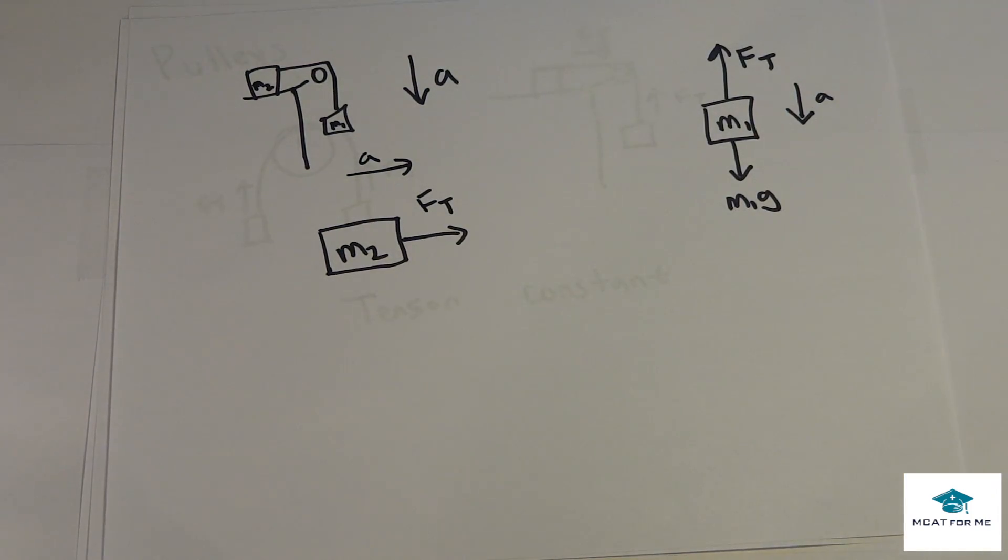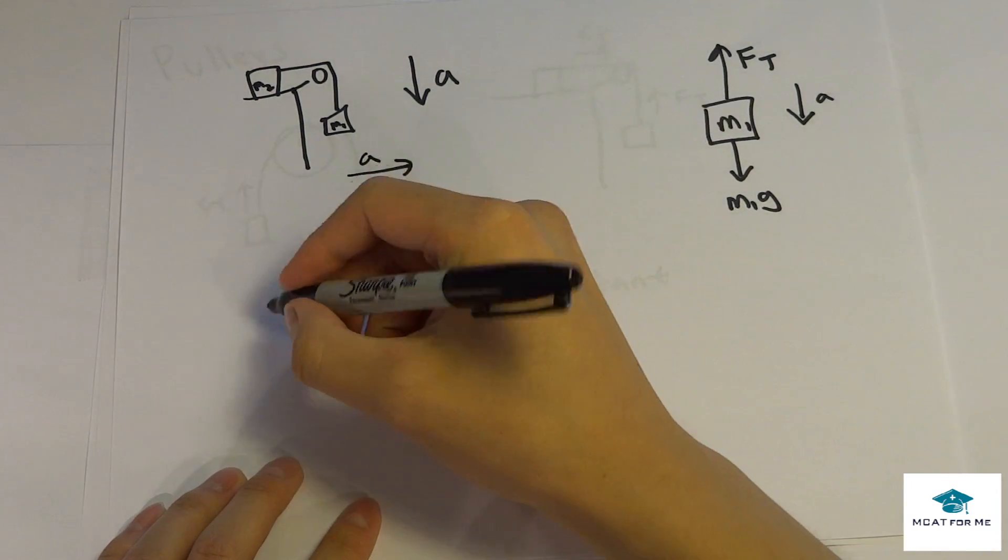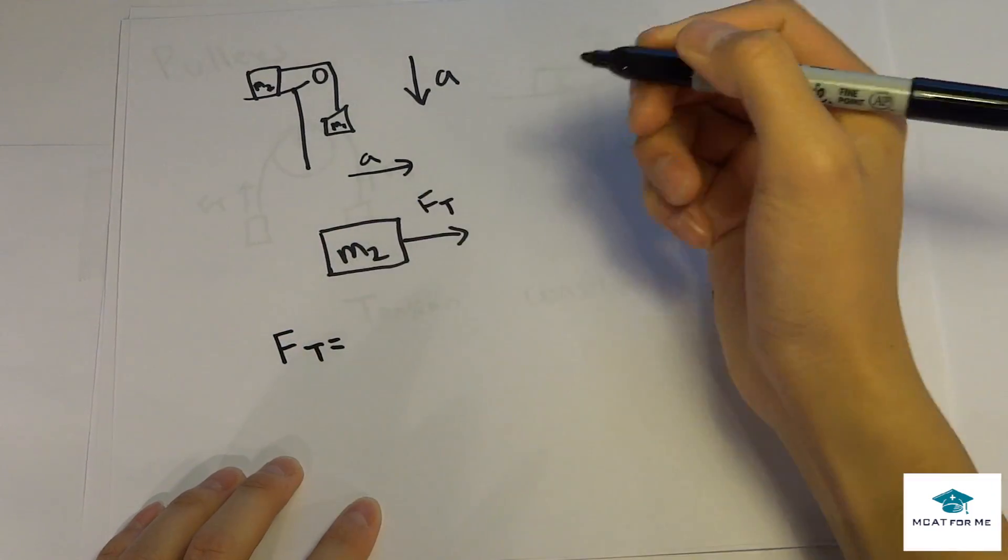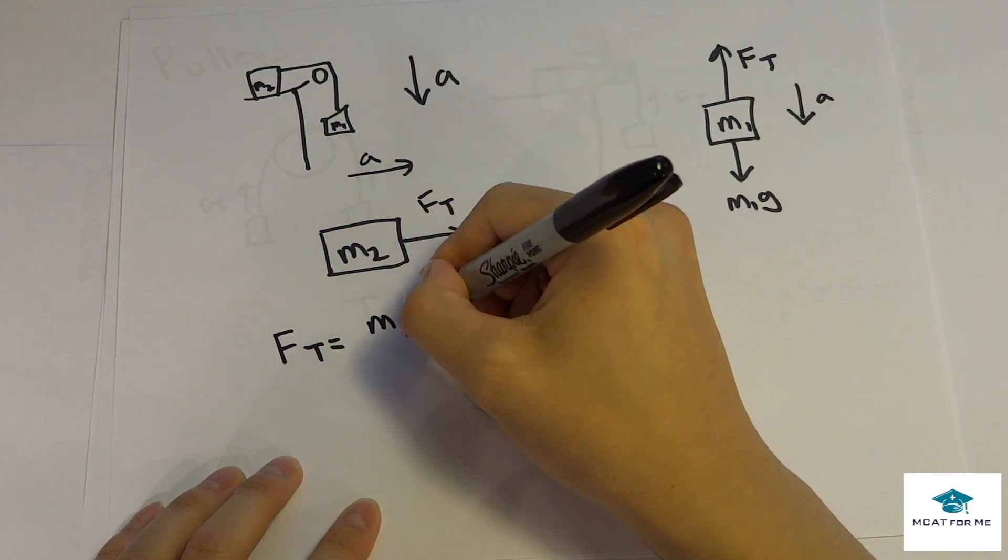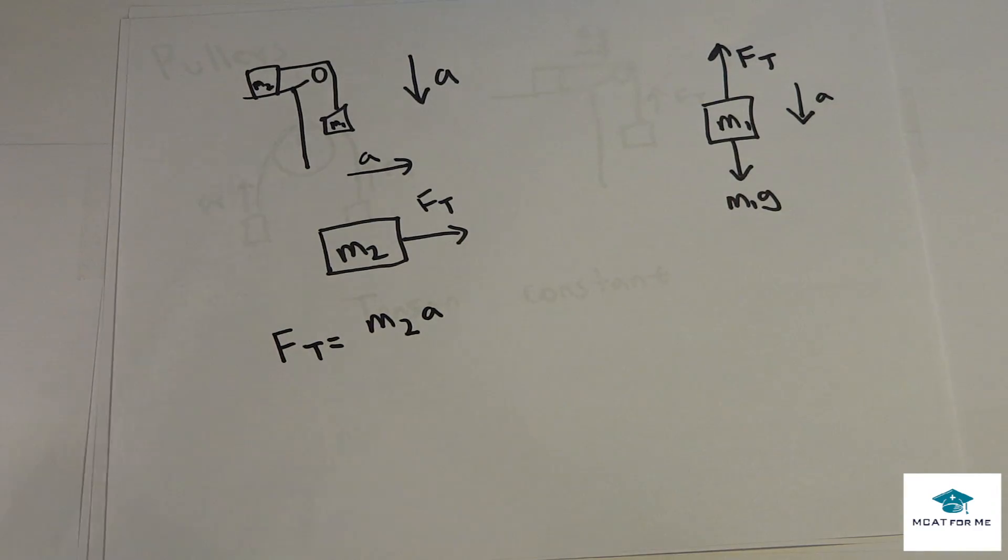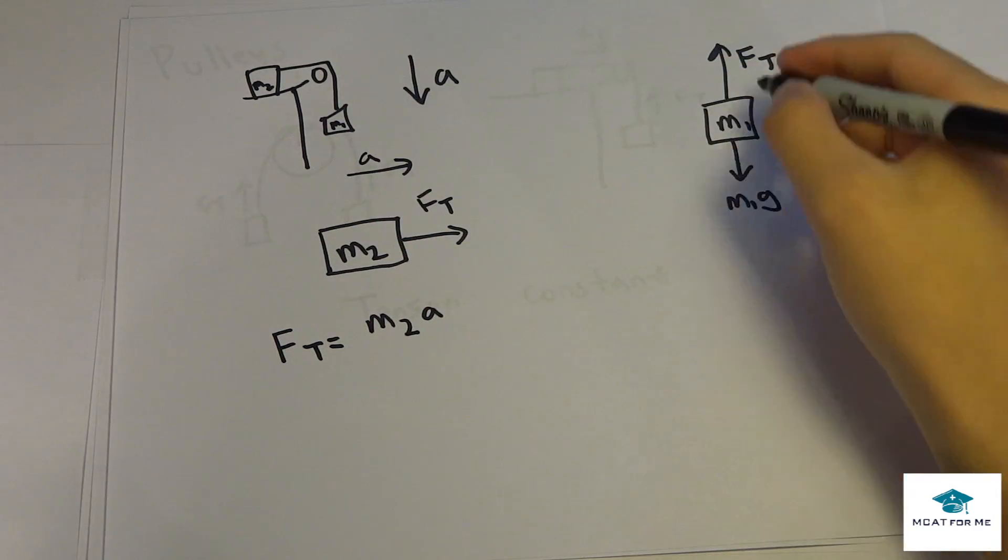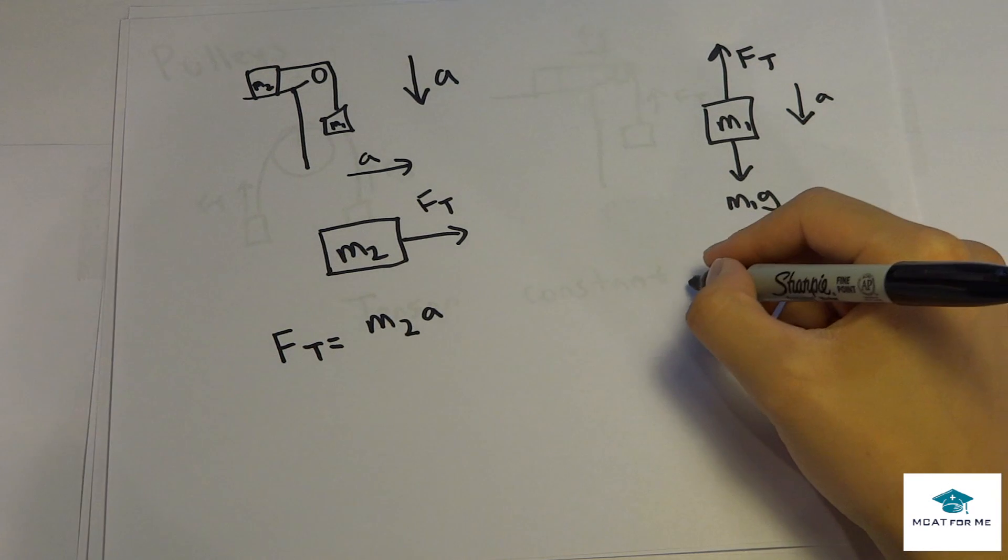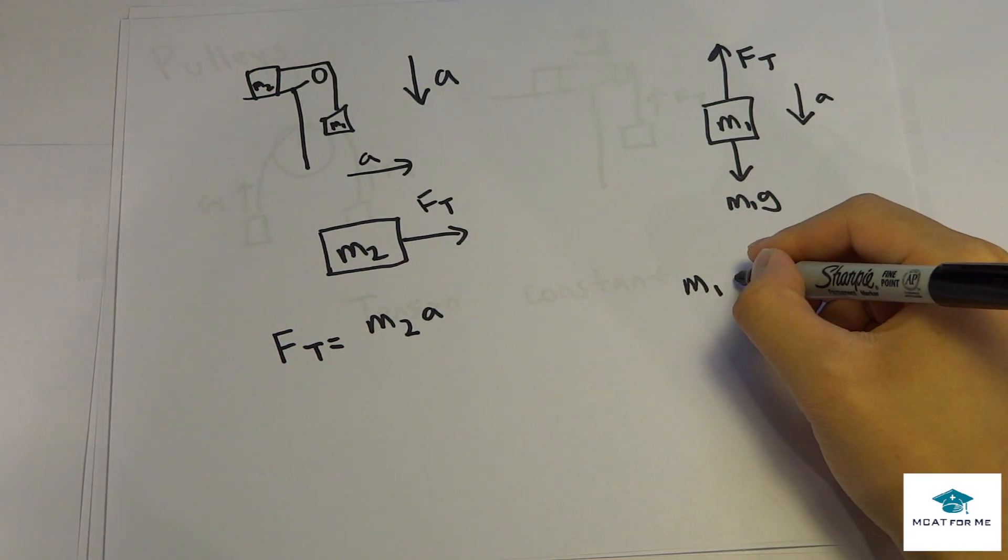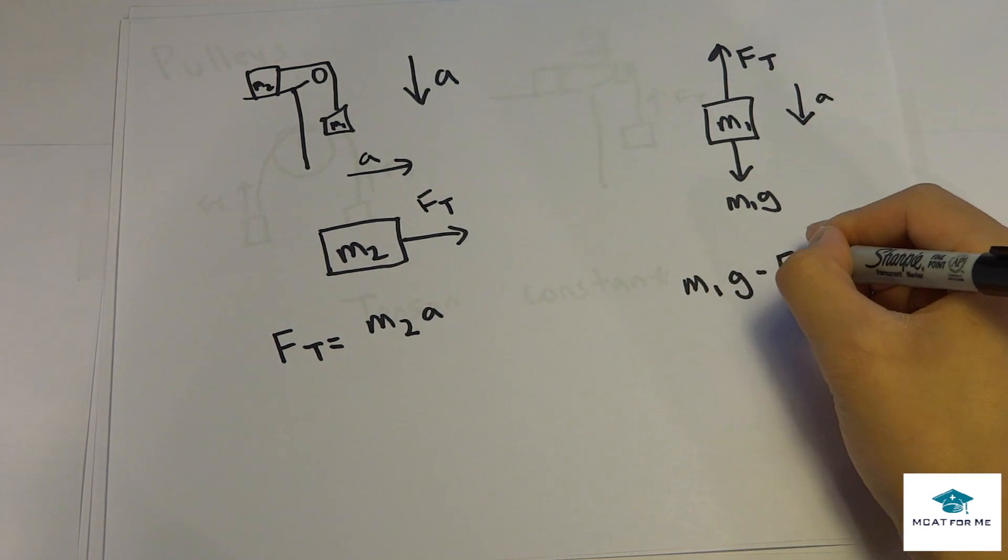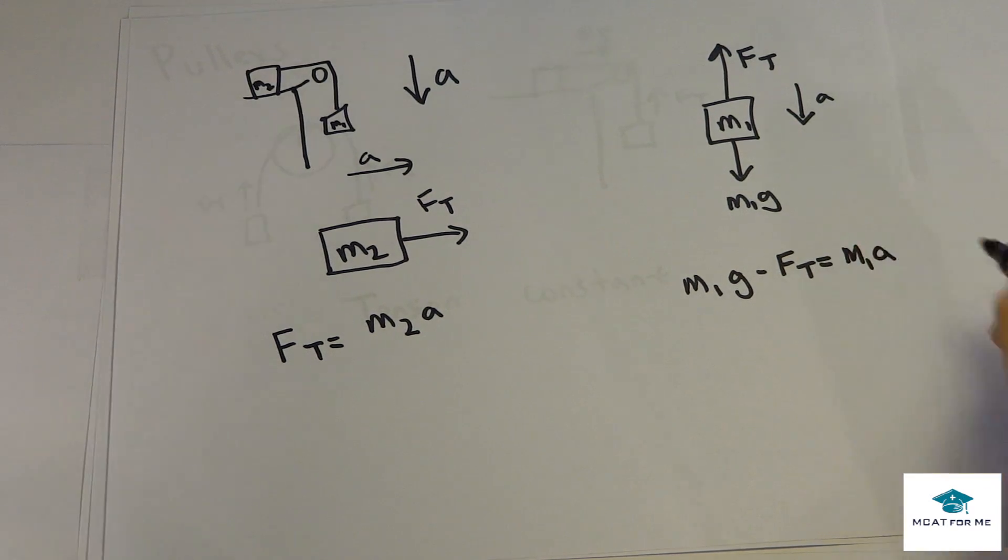So what do we do with this? So we know in this case, f of t equals what? Mass times acceleration, because it's the net, because there is no difference, it's just the net force will equal mass times acceleration. And in this case, like that, we see that M1g minus f of t equals M1 times a.